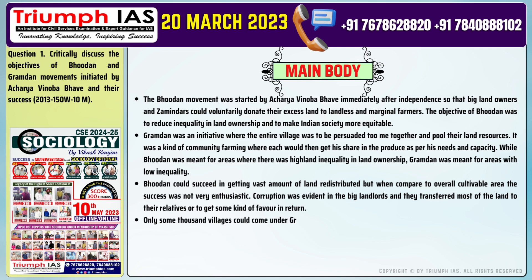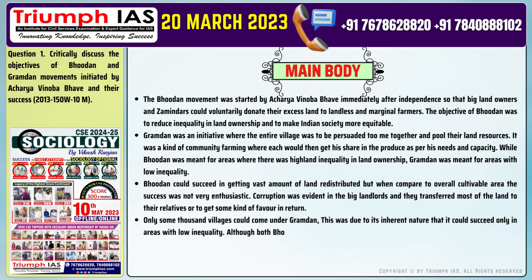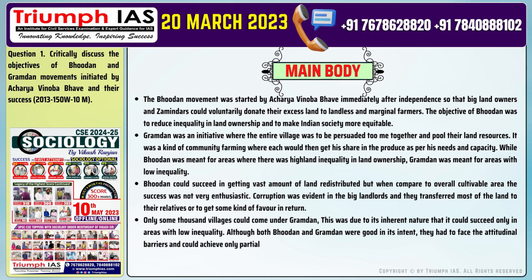Point 4: Only some thousand villages could come under Gramdhan, due to its inherent nature that it could succeed only in areas with low inequality. Although both Bhudan and Gramdhan were good in their intent, they had to face attitudinal barriers and could achieve only partial success.